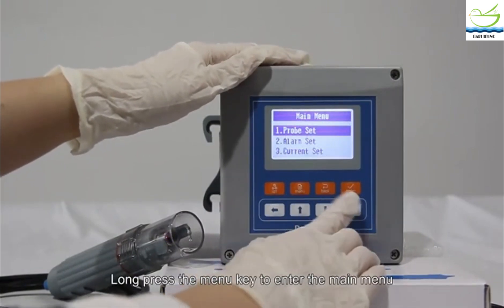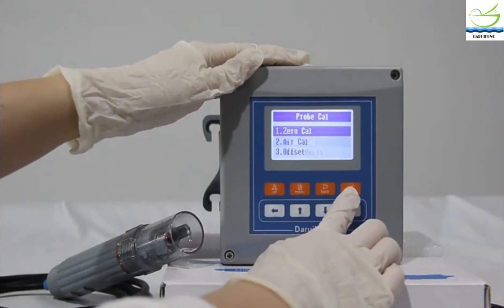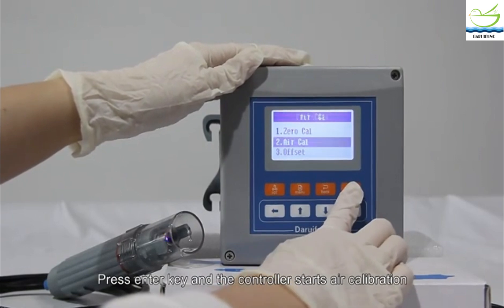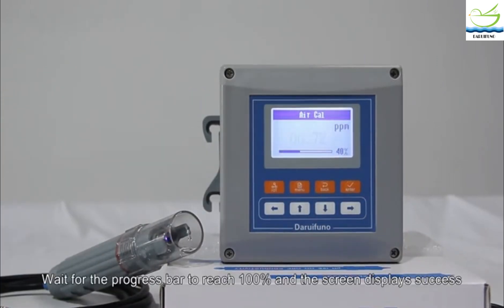Select Probe Set, then Probe Cal, then Air Cal. Press the enter key and the controller starts the air calibration. Wait for the progress bar to reach 100% and the screen displays success.